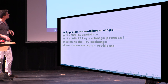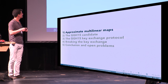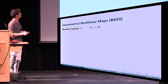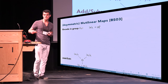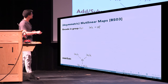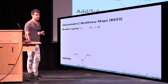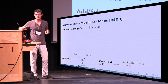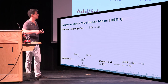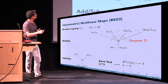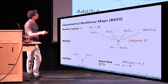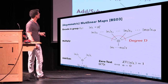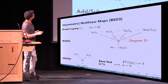In the rest of the talk I will describe multilinear maps, the candidate, the protocol, and how to break it. Going back to asymmetric multilinear maps: you have an encoding of an element a in group G_l. You can add and subtract elements in the same group, you can zero-test in any group — an element zero-tests true if it encodes zero — and you can multiply d elements together to get an encoding in the target group of their product.